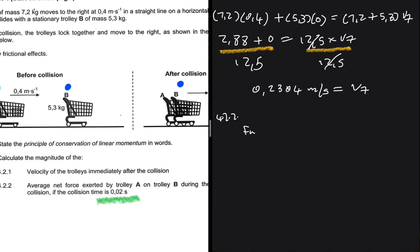So there's two ways of doing this one. You can say that F net equals the change in momentum divided by the change in time, or you can say that F net equals the mass multiplied by acceleration. They're all going to work.